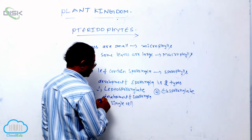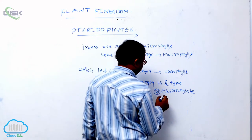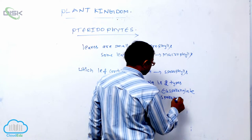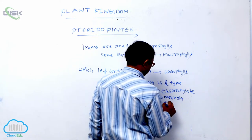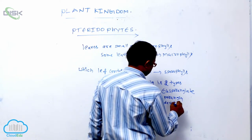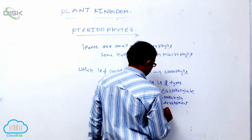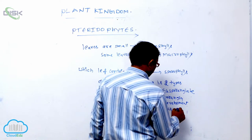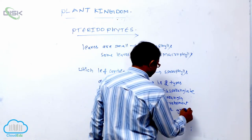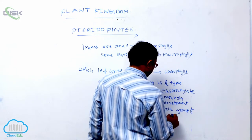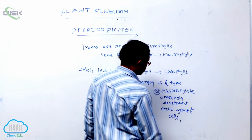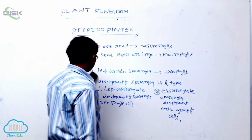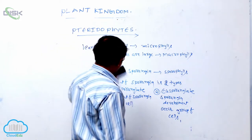In eusporangia, sporangia development occurs from a group of cells — that is known as the eusporangia condition.